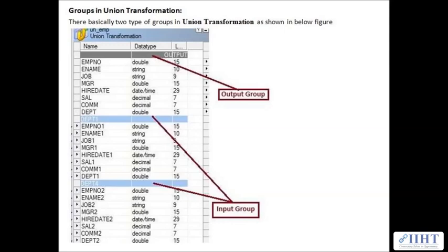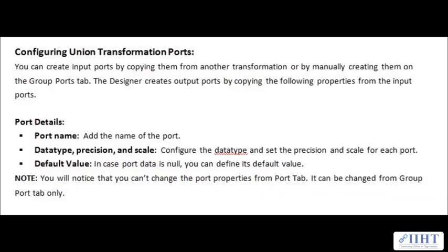The input group takes data from multiple sources. The designer copies ports of the input group to create a set of output ports for the output group. The output group transfers data to multiple targets. Output ports of these groups cannot be altered — port information is taken from the input group itself. You can create input ports by copying them from another transformation or by manually creating them on the Group Ports tab. The designer creates output ports by copying properties such as port name, data type, precision, scale, and default value from the input ports. Port properties can only be changed from the Group Port tab.